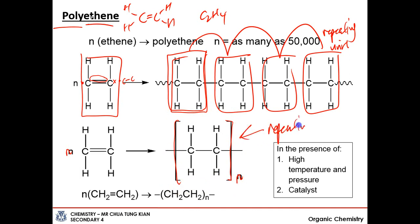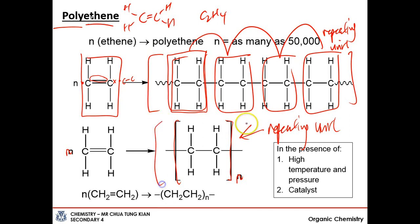If a question says draw the structure of polyethene, you draw the full polymer structure. When the question says draw the repeating unit, you draw just the bracketed unit with N. Do not confuse the two - they are not the same.